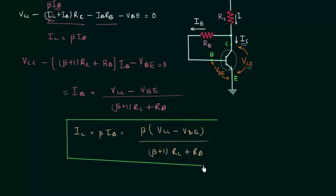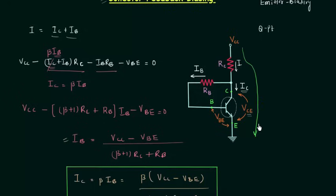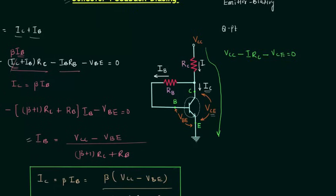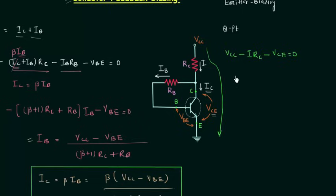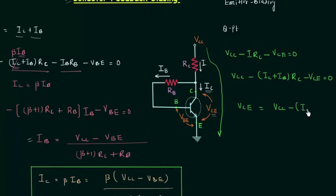Next we calculate voltage VCE by applying KVL in the output loop. Starting from VCC: VCC minus I times RC minus VCE equals zero, where I equals IC plus IB. So we have VCC minus (IC + IB) times RC minus VCE equals zero. From this, VCE equals VCC minus (IC + IB) times RC. By substituting the expression for IC we already evaluated, we can calculate IC and then find VCE.